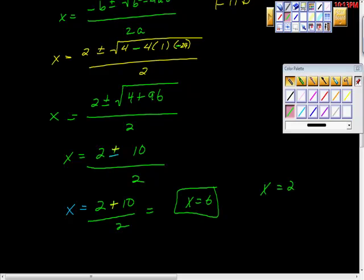And the other answer is x is equal to 2, right? It says minus, so minus 10 over 2. 2 minus 10 is negative 8. And negative 8 over 2, x equals negative 4.